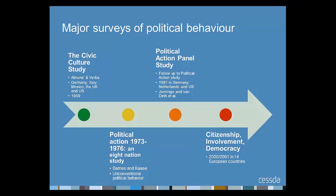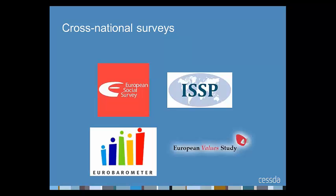Social surveys are one of the major sources of data on political behaviour. European countries have featured in many seminal surveys, such as Almond and Verba's Civic Culture study, the Political Action study by Barnes and Kaase, and more recently the Citizenship Involvement in Democracy study. A source of more recent data can be found in major cross-national surveys such as the European Social Survey and the International Social Survey Programme, both of which have questions about electoral participation and party affiliation in their core questionnaire, with further questions in thematic modules.